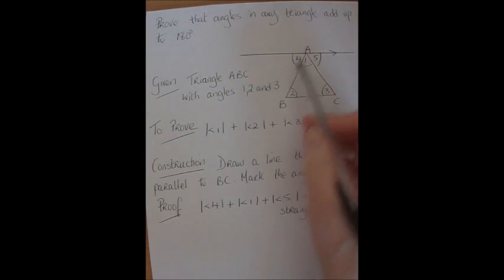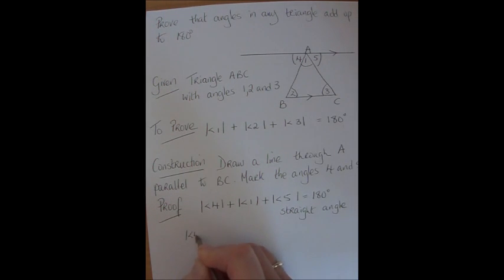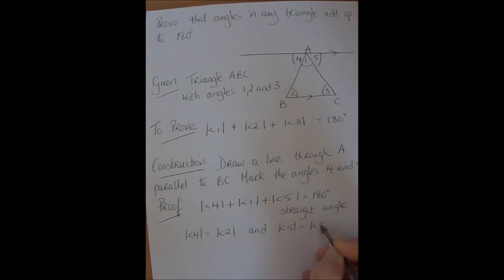Now also because these are parallel I know that we've got one pair of alternate angles over here with this transversal and another pair of alternate angles with the second transversal. So angle 4 and angle 2 are equal. And also angle 5 and angle 3. And the reason is they're alternate angles.